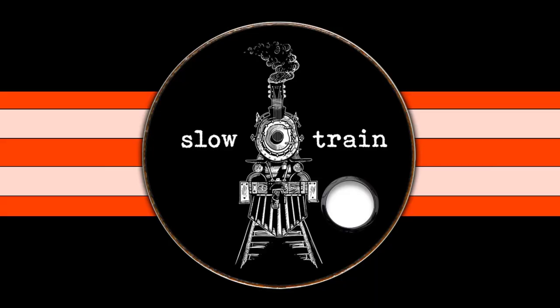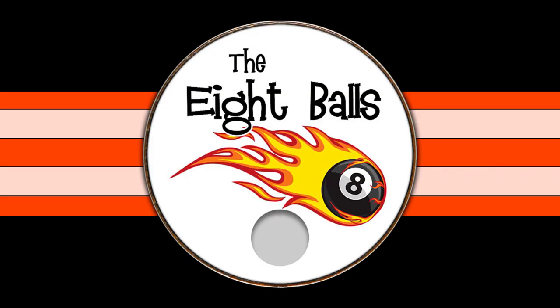Hey, Jim from Drum Art here. I wanted to address a couple of questions we received after last week's drum roll weekly roundup vlog. In it, we highlighted a couple of drum heads — one for a band called Slow Train and one for a band called the Eight Balls. I mentioned that those heads were created through our drum head design tool, the Head Builder, and our online image catalog. A couple people asked: what is that, how does it work, and what is the difference?